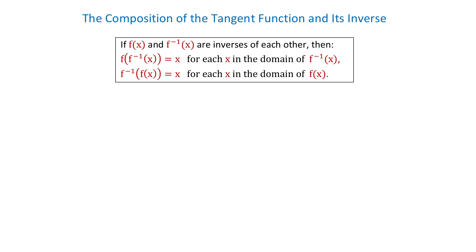Let's start with the composition of two inverse functions, f of x and f inverse of x. From the definition of inverse functions, the composition of f and f inverse of x equals x, and the composition of f inverse and f of x is also x. Each of these statements comes with a condition. In the first one, x has to be in the domain of f inverse of x, and in the second one, x has to be in the domain of f of x. In other words, these expressions equal x as long as x is a number that we can use inside the parenthesis.